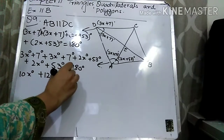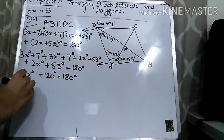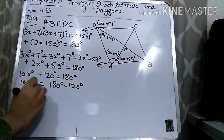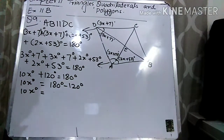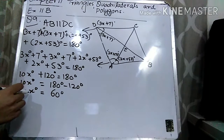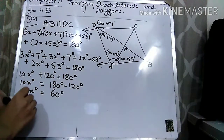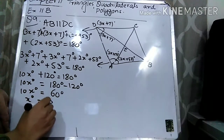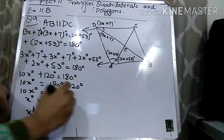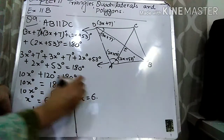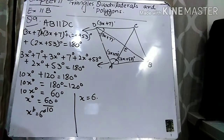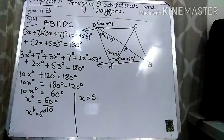So 10x plus 120 degrees equals 180 degrees. This 120 is adding, so when it goes to the other side it will subtract: 180 degrees minus 120 degrees. So 10x degrees equals 60 degrees. Now this 10 is multiplying with x; when it goes to the other side it will divide. 60 divided by 10 equals 6. So x equals 6. I hope this question is clear to you — I made the two angles equal, used the property of interior angles of parallel lines, and found the value of x.